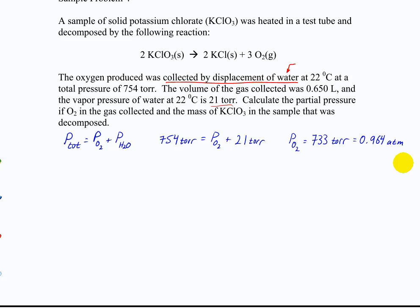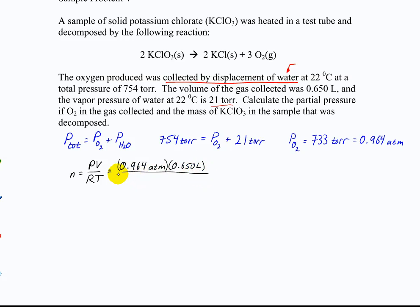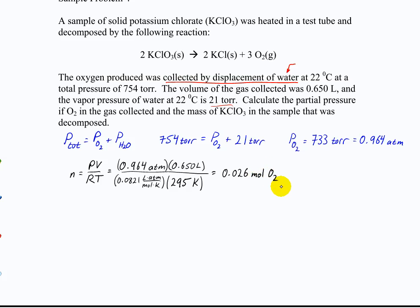Most of you figured out that you need to find moles using the ideal gas law. So that's PV = nRT: your pressure, your volume, R, and T. 22°C is 295 K. We do all that and we get 0.026 moles of oxygen.